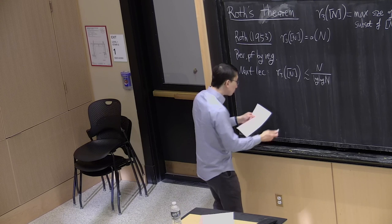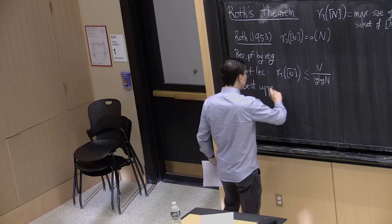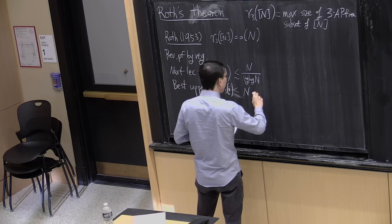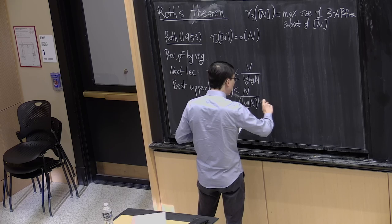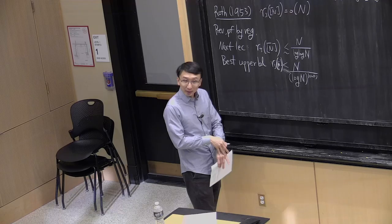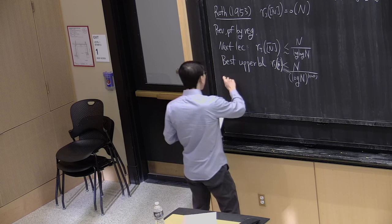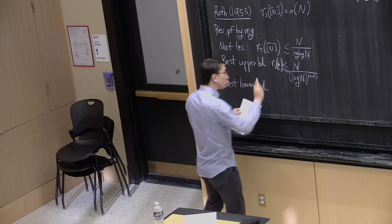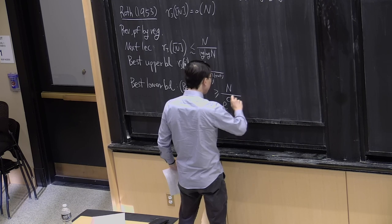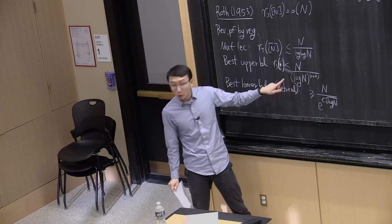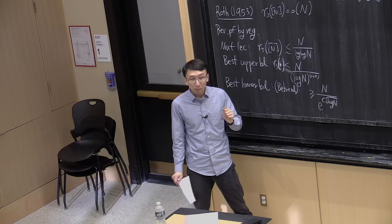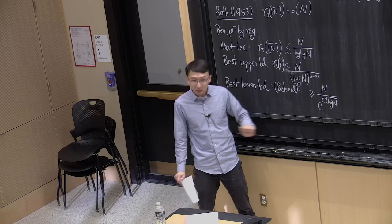The current best upper bound known is essentially n over log n raised to 1 plus little-o(1), roughly n over log n. We do not know or even have great guesses on what the answer should be. The best lower bound, a construction due to Behrend seen earlier in the course, is of the form n over e^{c√(log n)}. It seems very difficult to improve this upper bound without genuine new ideas, though there is evidence that the lower bound might be closer to the truth.